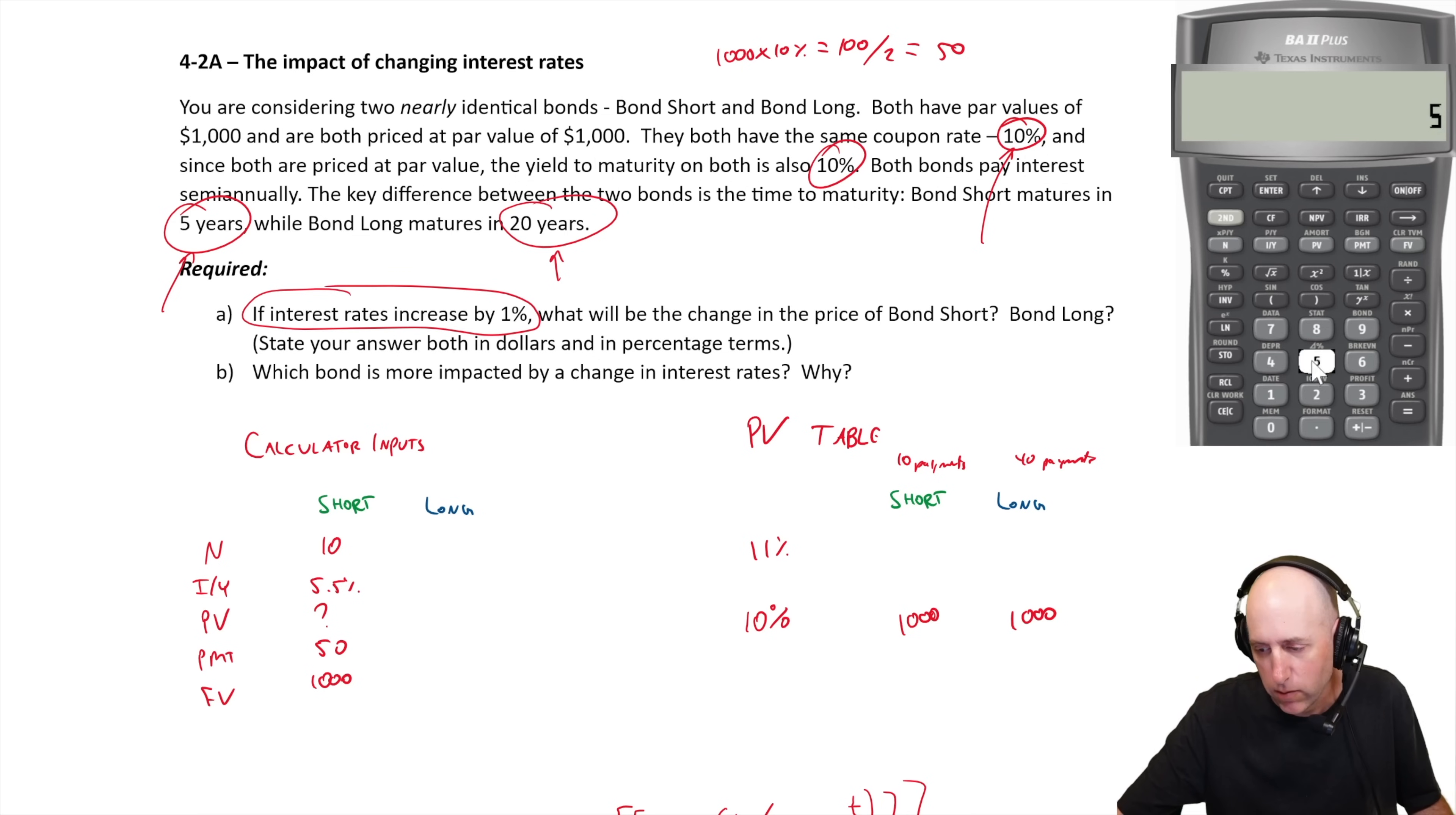And the FV is a thousand. Let's compute the price of this bond. Clear out, 10 goes in as N, 5.5 goes in as my IY, 50 goes in as my PMT, and a thousand goes in as my FV. I will compute PV, I get 962.31.